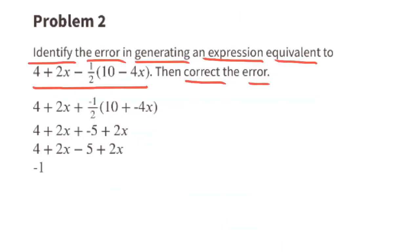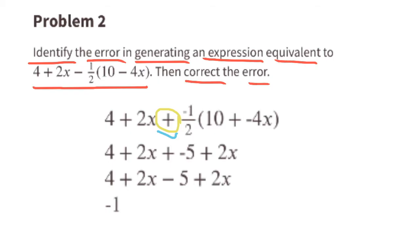Problem number 2. Identify the error in generating an expression equivalent to 4 plus 2x minus half of 10 minus 4x, then correct the error. This says plus negative half of 10 and plus negative half of negative 4x.